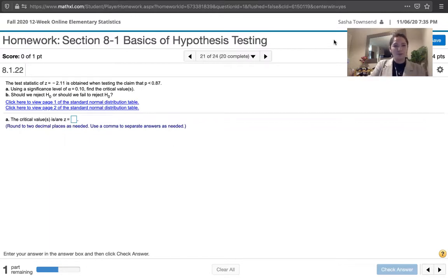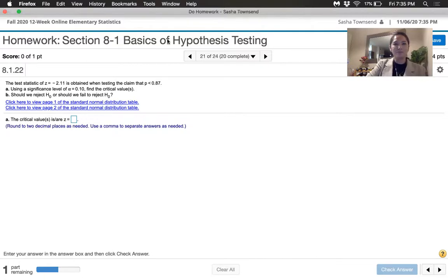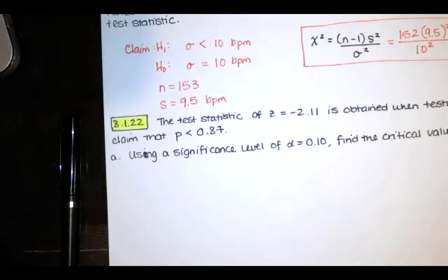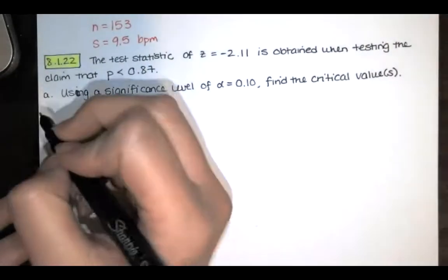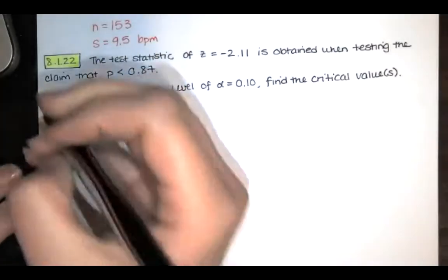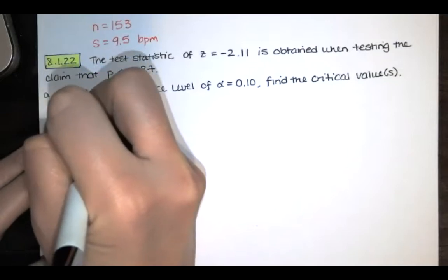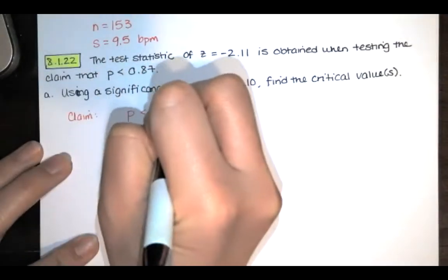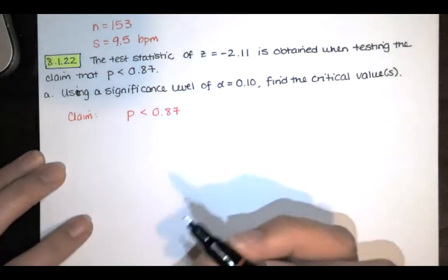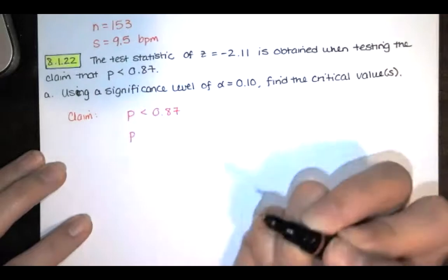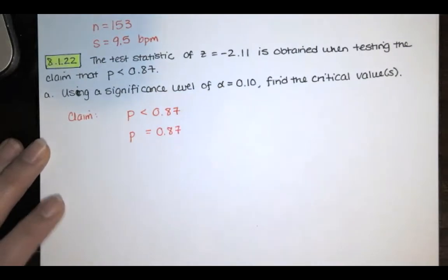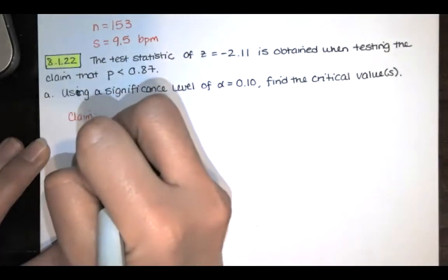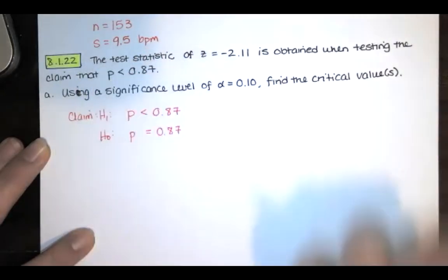I'm going to show you my piece of paper and then we'll talk through how we find the critical values. The first thing I would do is state my claim. My claim is that p, the population proportion, is less than 0.87, and that does not contain the condition of equality. So I will write another hypothesis that does contain the condition of equality — that one is our null. And in this case, the alternative hypothesis is the claim.